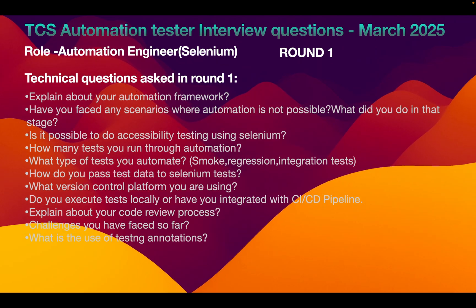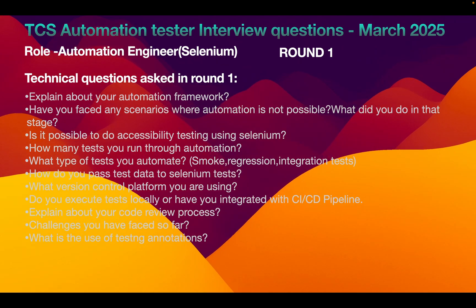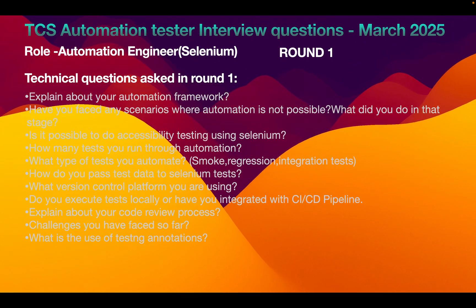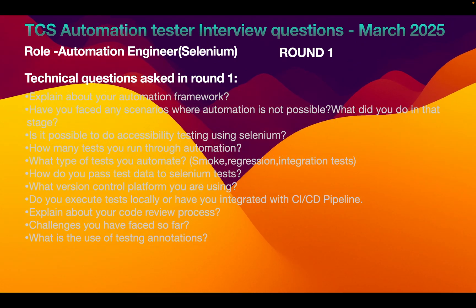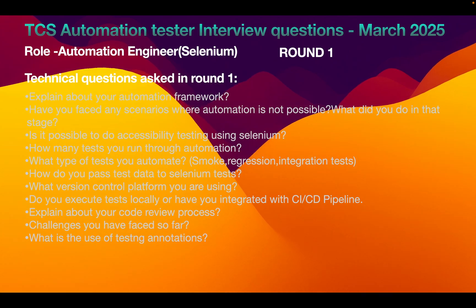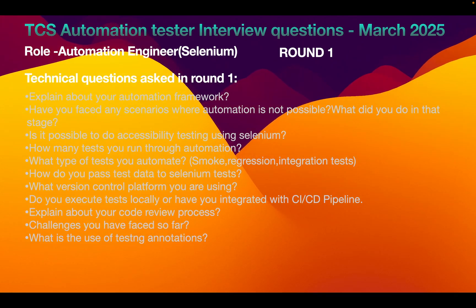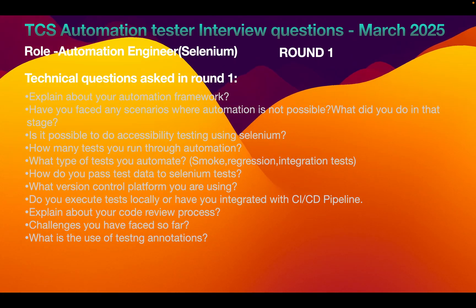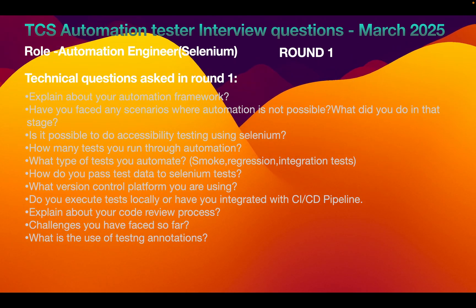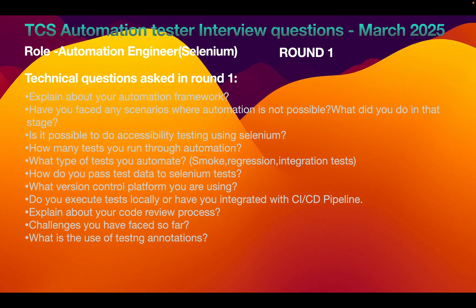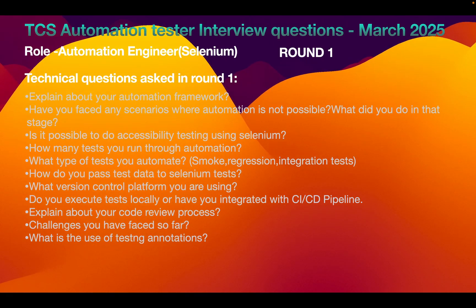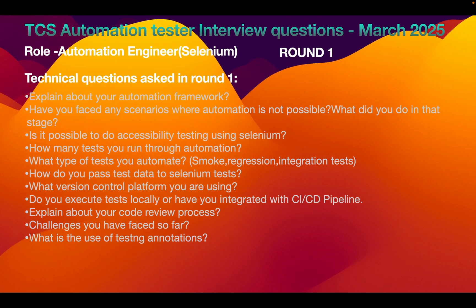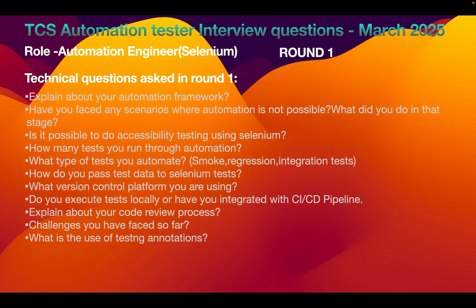How many tests do you run through automation? For example, if you have 400 tests in your automation framework, explain those cases. What type of tests do you automate — regression, integration? If you are automating APIs also, explain that. How do you pass test data to Selenium tests? Most use Apache POI with Excel or property files — explain that flow. What version control platform are you using? We use Git.